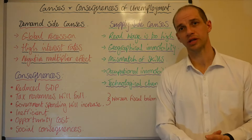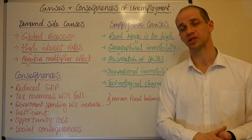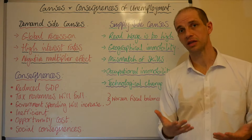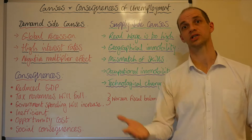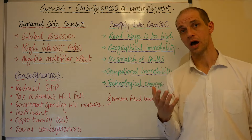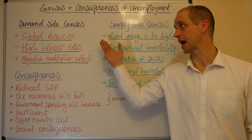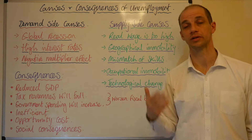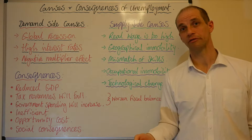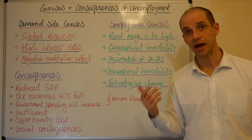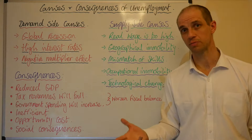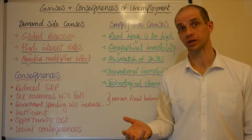The first point on the demand side is really about global demand. In the event of a global recession — that is global GDP contracting — what is likely to happen is there will be a collapse in demand for a country's exports. That will lead to cyclical or demand-deficient unemployment within export industries.